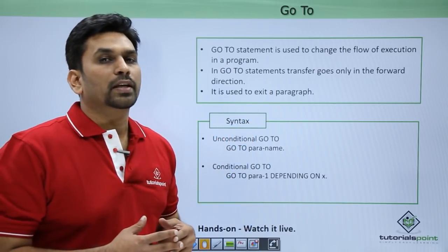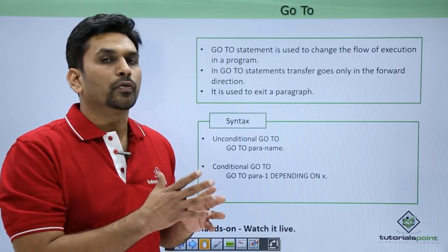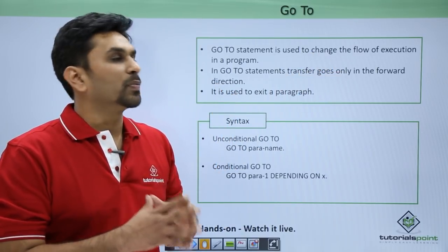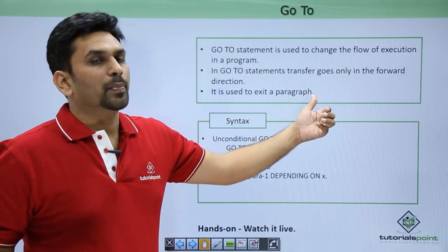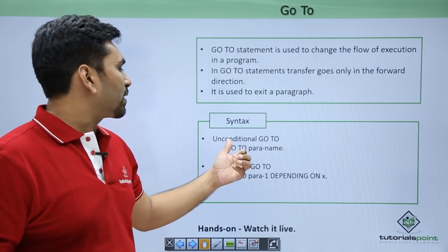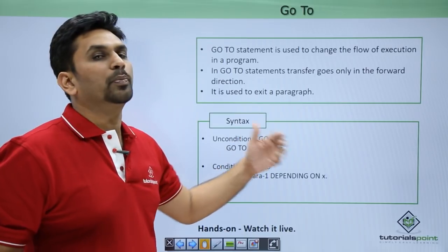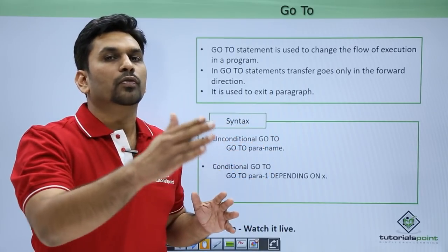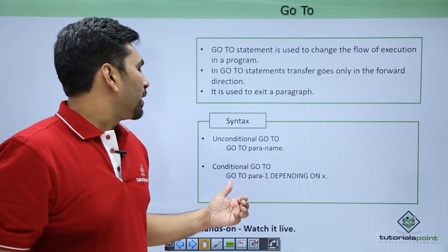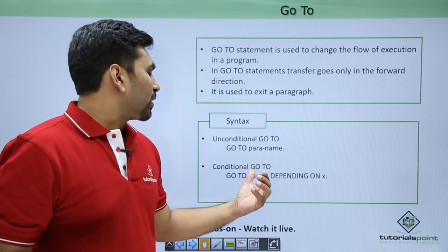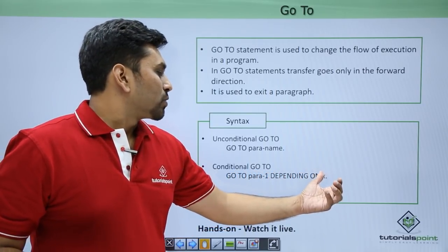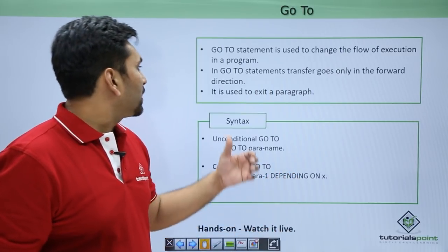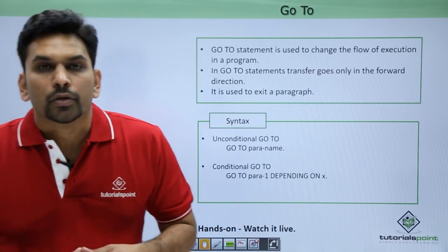The GOTO statement is used to change the flow of execution in a program. Unlike PERFORM, in GOTO the control never comes back — transfer goes only in the forward direction and it is used to exit a paragraph. There are two forms: unconditional GOTO simply transfers to a named paragraph and control never returns. Conditional GOTO depends on the value of a variable — for example, GOTO PARAGRAPH-1 OR PARAGRAPH-2 OR PARAGRAPH-3 DEPENDING ON X. If X is 1, paragraph 1 executes; if X is 2, paragraph 2 executes.